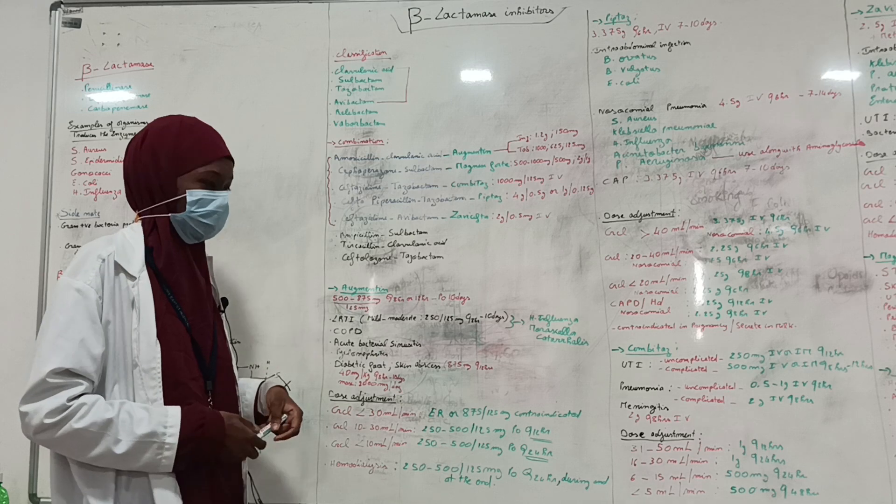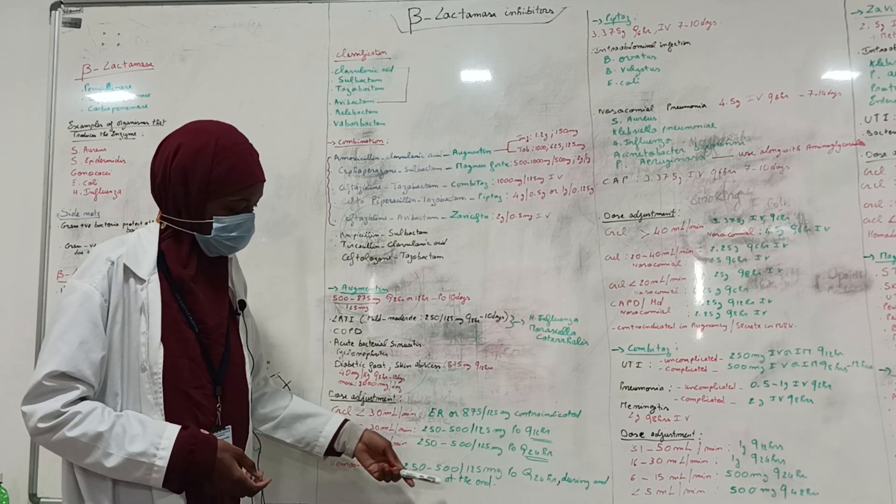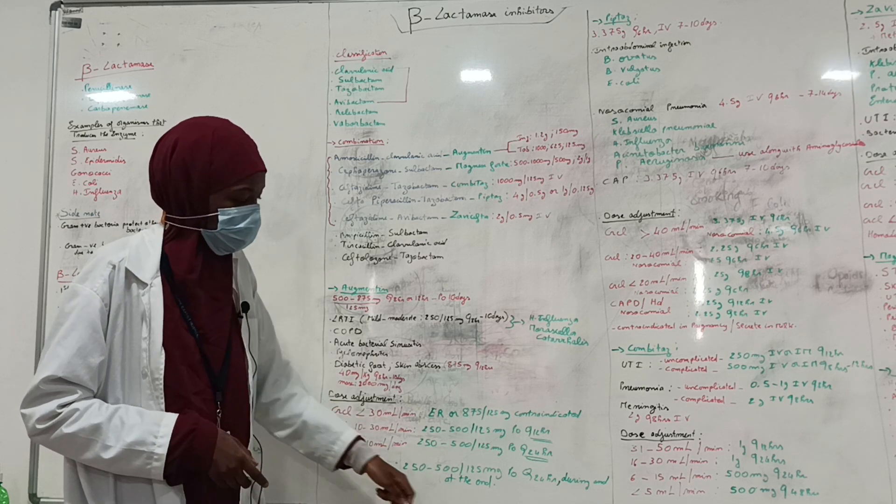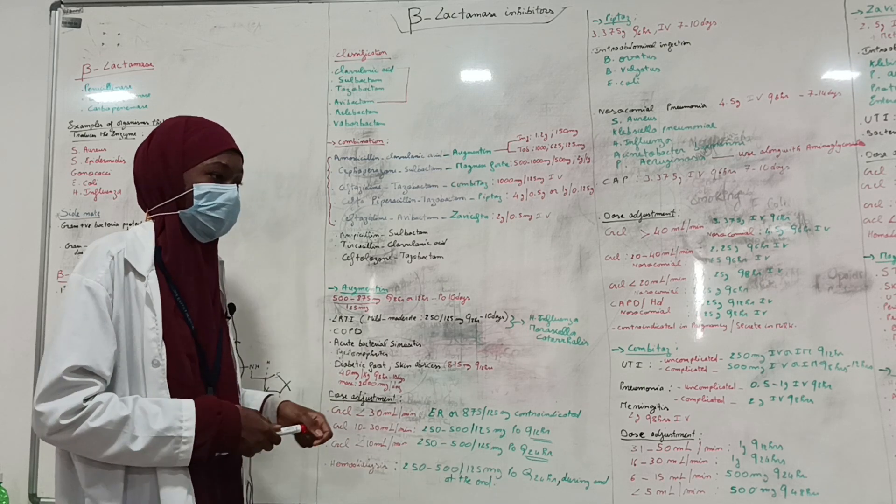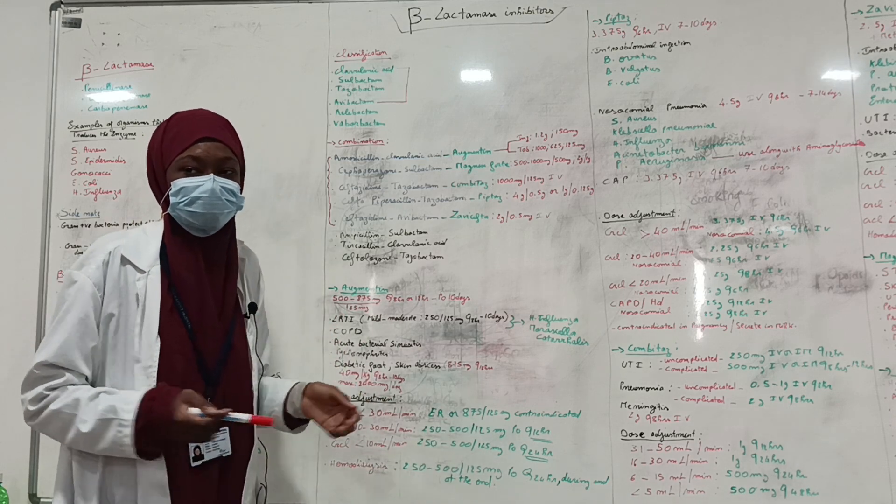Don't mix them up: 12 hours, 24 hours. For a patient on hemodialysis, 250 to 500 by 125 mg every 24 hours is recommended, and it should be given during and at the end of the hemodialysis process.